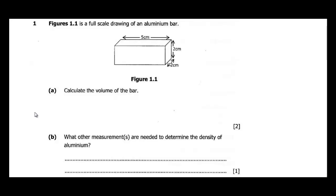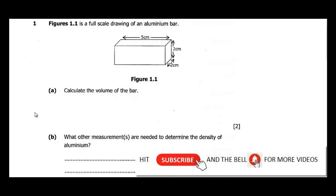In this video we are going to be solving the thesis 217 past question for the ECZ exam. Figure 1.1 is a full scale drawing of an aluminum bar. If this is your first time hitting this channel, please do not forget to hit the subscribe button and click the notification bell for subsequent videos.